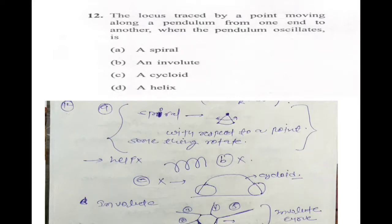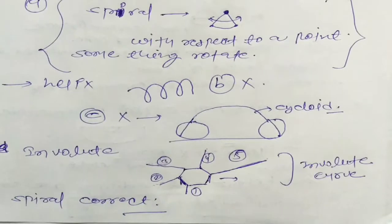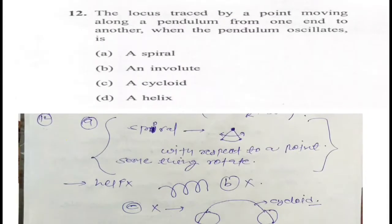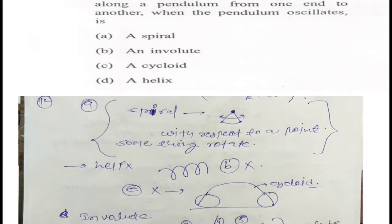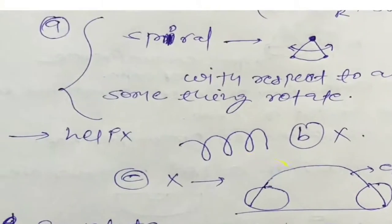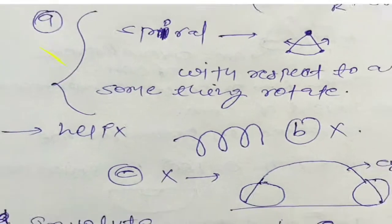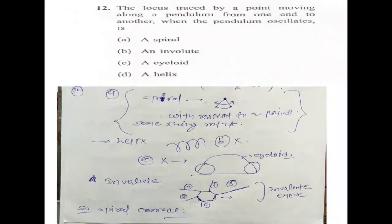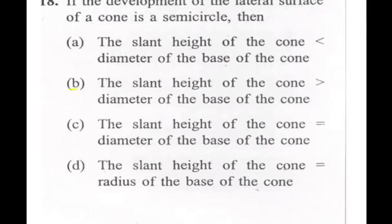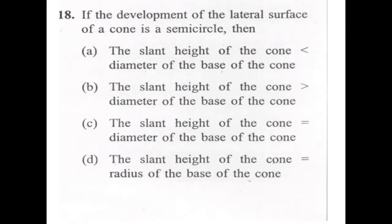Option B — involute — is different. Involute is a different type of curve defined in the curves module. In a cycloid, a circle is rotating and the tracing location is called a cycloid. Helix is very different — on cylinders or some solids we bound something like that. So helix is not correct either; spiral is the correct answer.